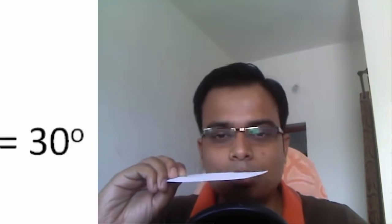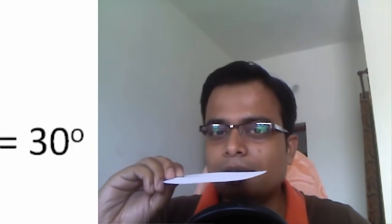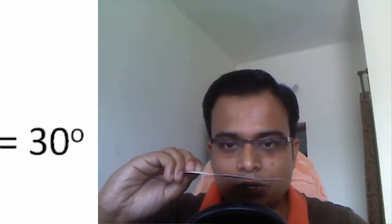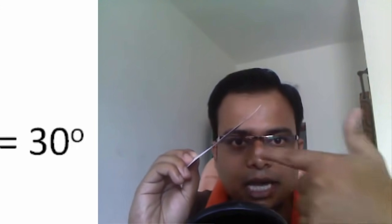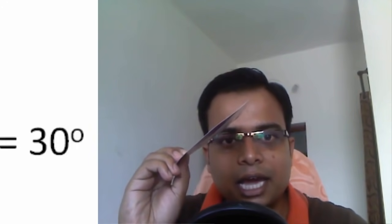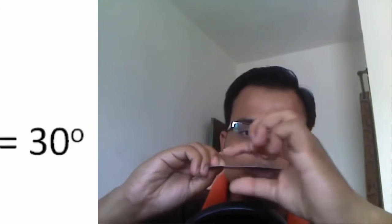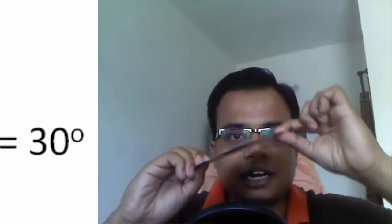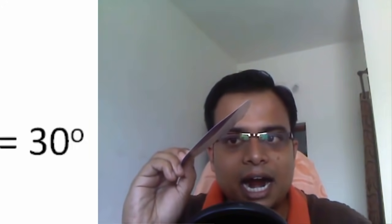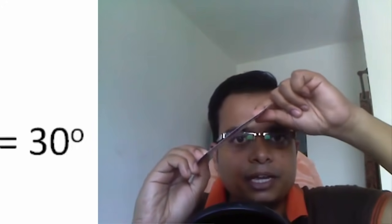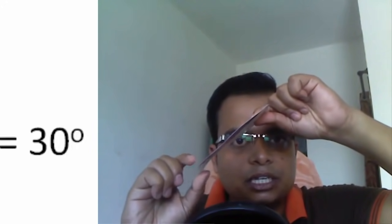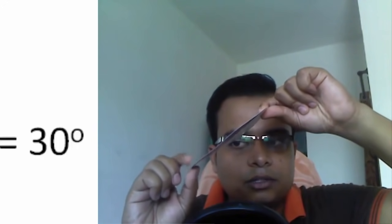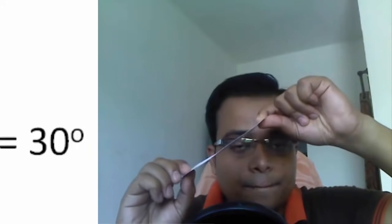Coming to step two, we go for surface inclination — surface inclined to HP. This angle of 45 degrees can be seen from the front. Therefore the front view, which appears as a line, will be recreated at an angle of 45 degrees, making sure that point A still remains grounded. This is diameter AB, and this is point A which still remains grounded.